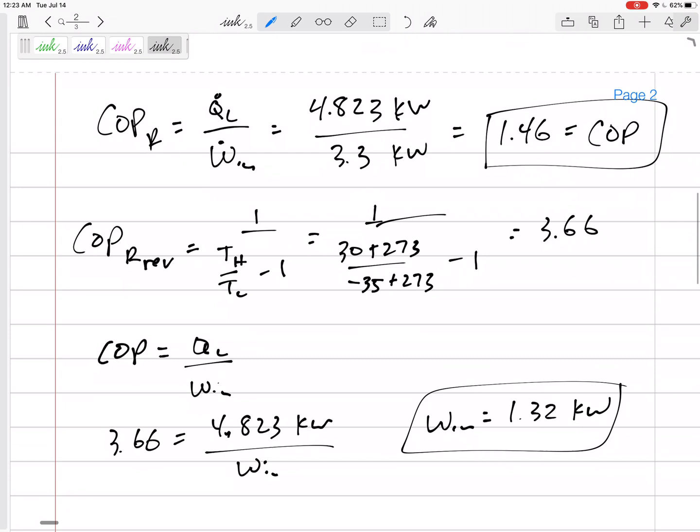3.3 kilowatts. So sometimes we add on a little bit extra part of the problem: Hey, what if this is Carnot? What's the best possible scenario? What if this was ideal? Or, in this case, what is the minimum power input for the same refrigeration load? We can combine the regular refrigerator problems with the Carnot refrigerator problems.